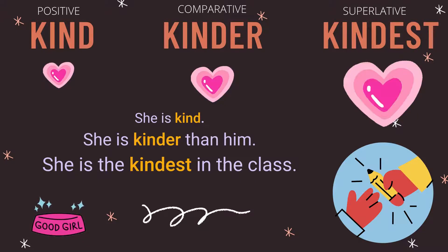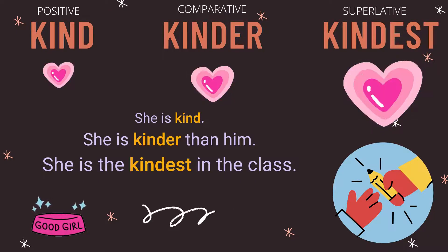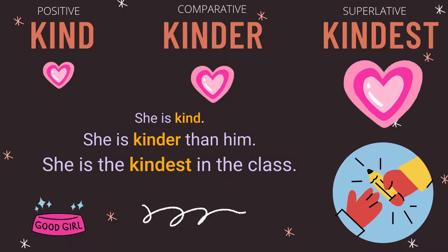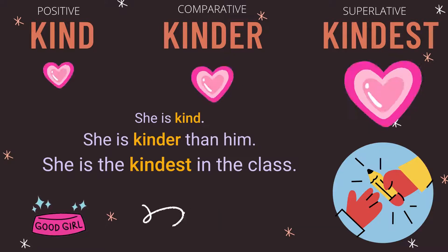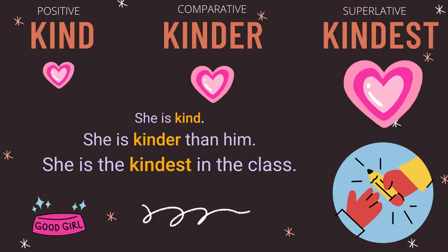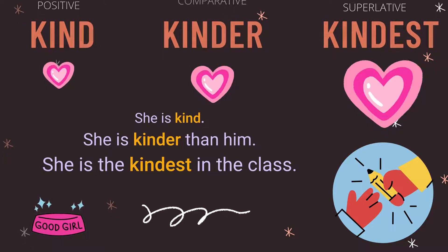The first one-syllable word is 'kind'. For comparative it is 'kinder', and for superlative we use 'kindest'. While using it in a sentence: for positive, you say 'she is kind'; for comparative, 'she is kinder than him'; and for superlative, 'she is the kindest in the class'.